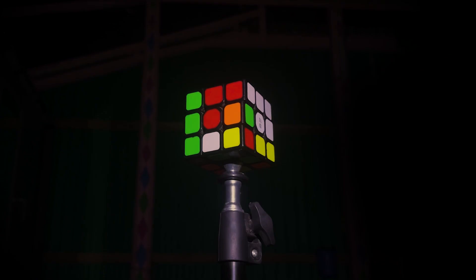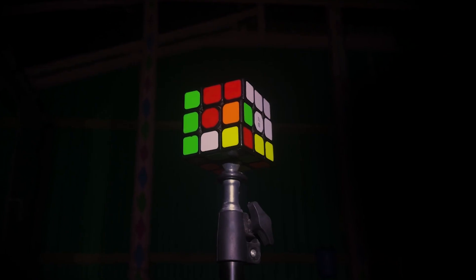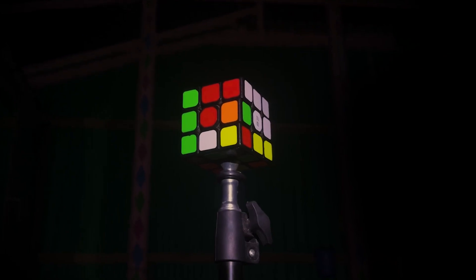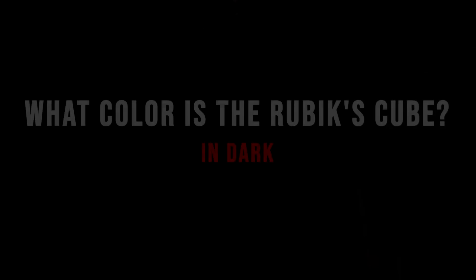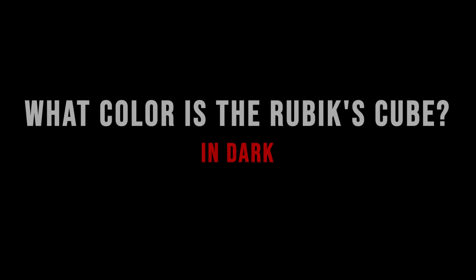Let's turn off the lights. All you see is black. But that does not change the fact that the Rubik's cube is still there. Physically, the cube remains the same whether the light is on or off. Obviously, you can't see it because there is no light. But what exactly happened to its color? What color is the Rubik's cube?